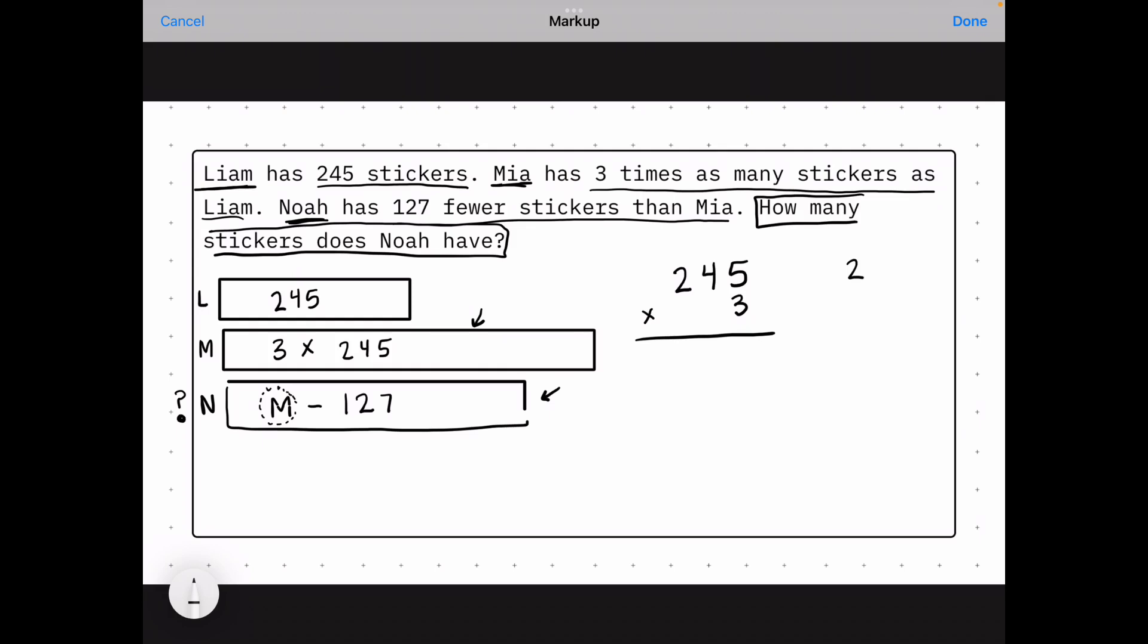Setting this up, both partial products and standard algorithm. 3 times 5 is 15, 3 times 40 is 120, 3 times 200 is 600. Adding up all those products, and I get 735.